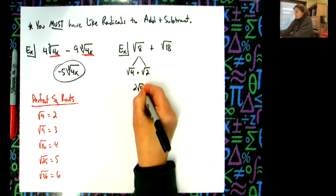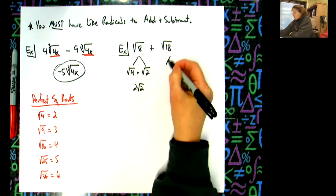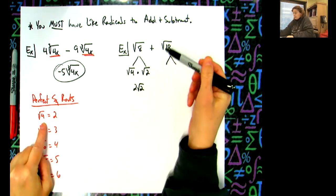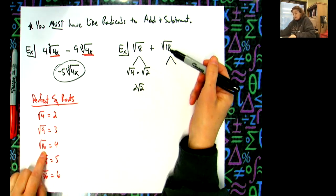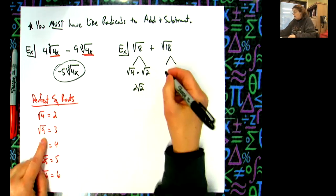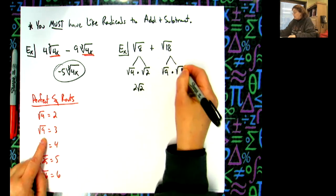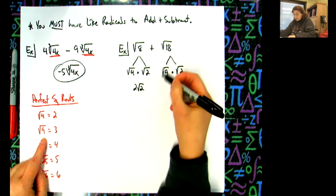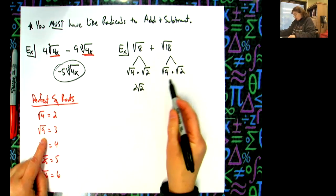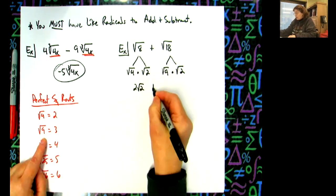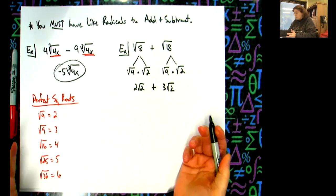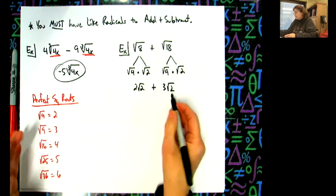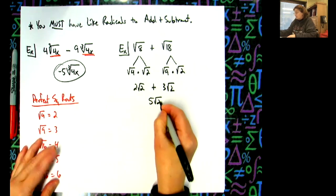Now I'm going to do the same thing for 18. 18 divided by 4? No. 18 divided by 9? Yes. It has to be 9, so √9 × √2. That perfect square goes in front, so that's 3√2. The plus sign needs to come down - don't forget the plus sign. Then 2√2 + 3√2. This one was easy because the numbers are so small. Now I have like radicals, so 5√2.